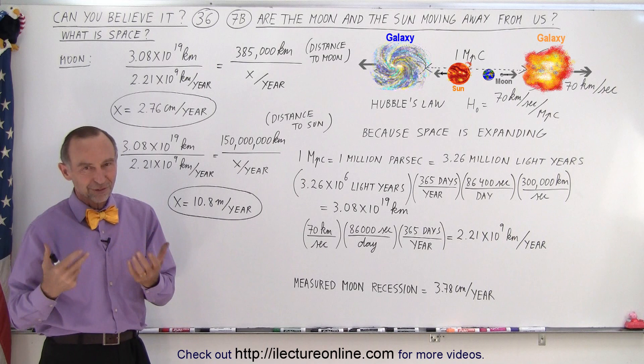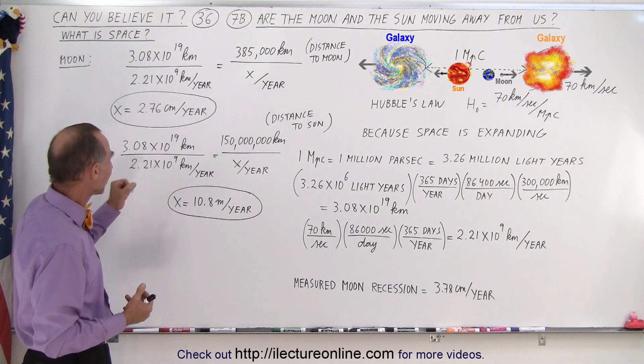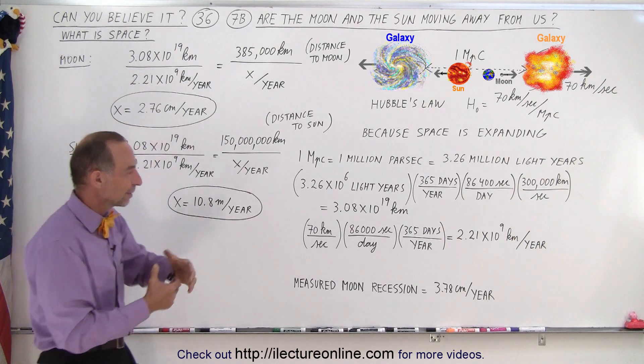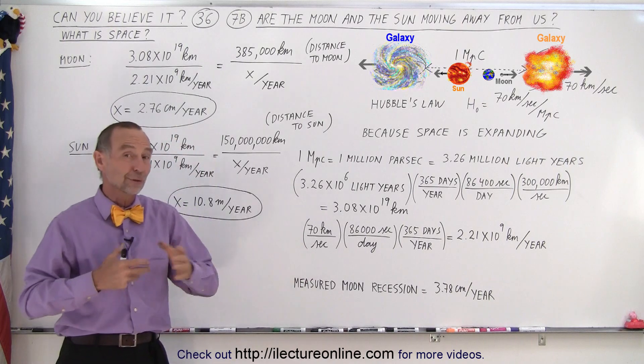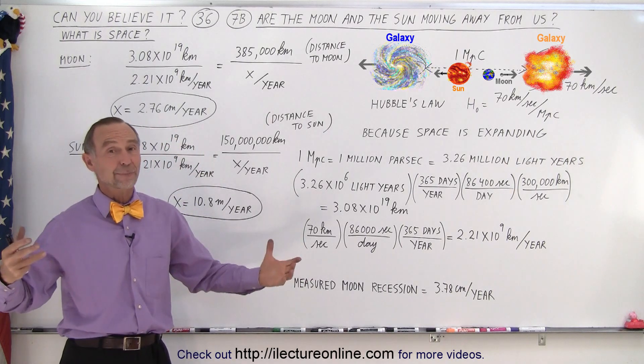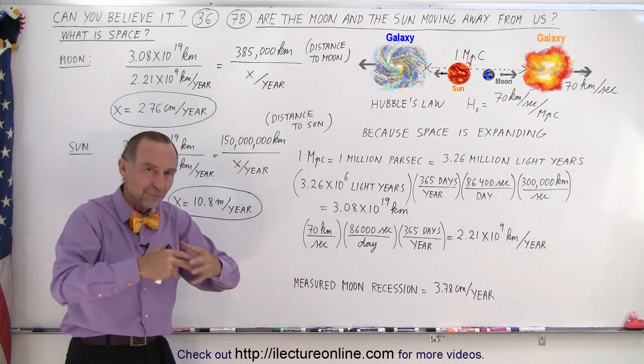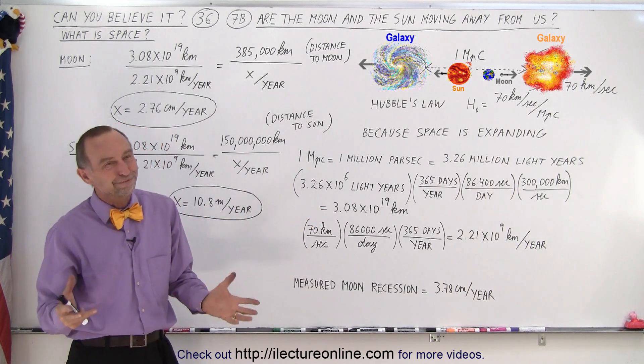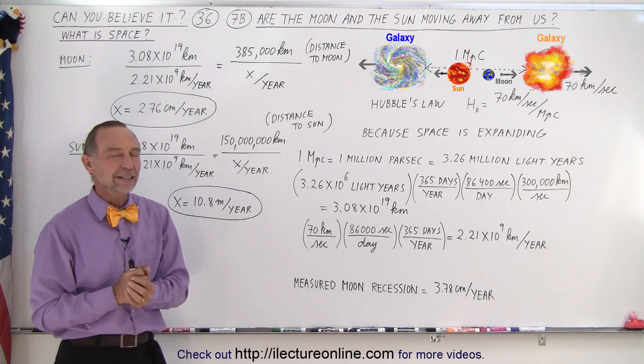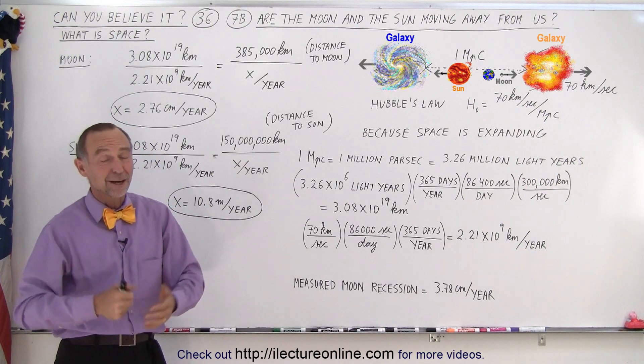But who knows? There still may be an effect. It may still be that there's a slight amount of separation between the moon and the earth due to Hubble law. Space is expanding, there's no question about it. Galaxies are moving apart. Does it affect objects within the solar system? We still have to wait to find out. And that is how it is.